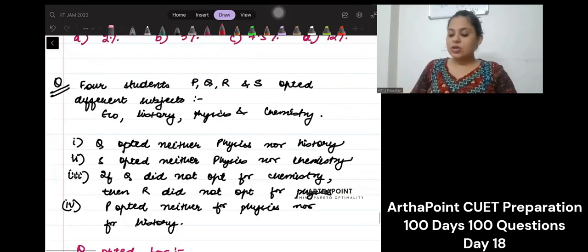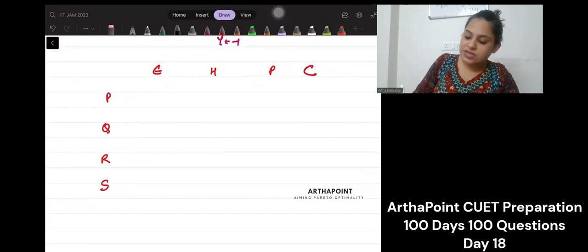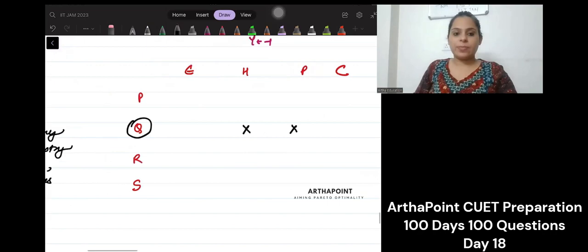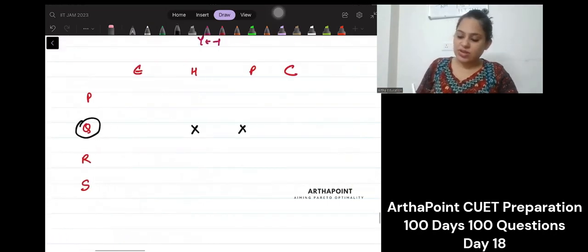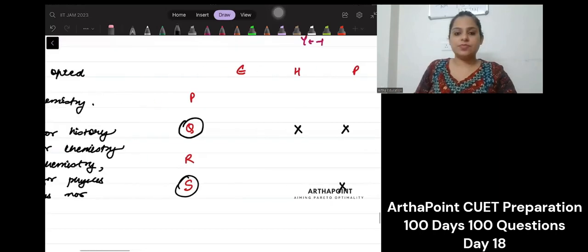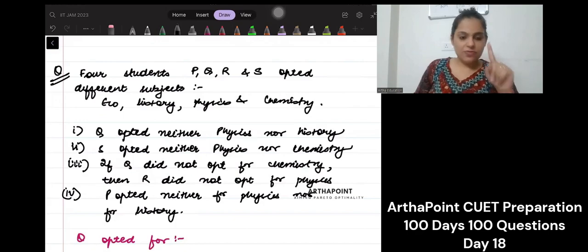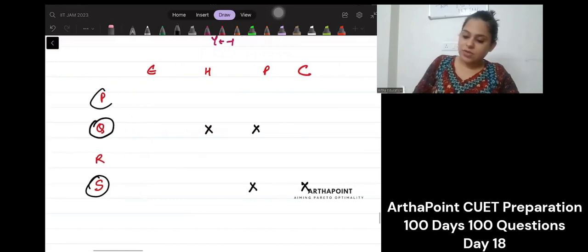First of all, Q opted neither physics nor history. So Q is going for neither physics nor history. S opted neither physics nor chemistry. So S opted neither physics nor chemistry. Third sentence, read it. First of all, P opted neither physics nor history. So P opted neither physics nor history.